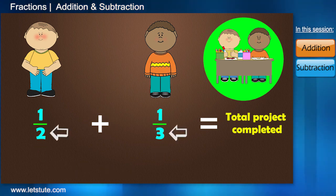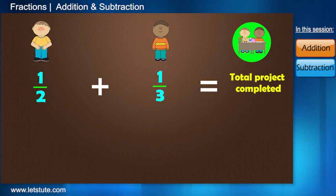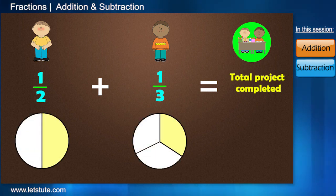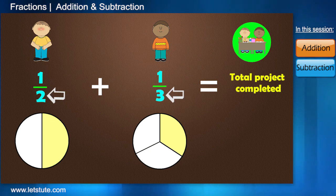If the denominators are not equal, the fractions will represent two completely different entities and hence, by making the denominators same, we make the fractions common and they can be added now.